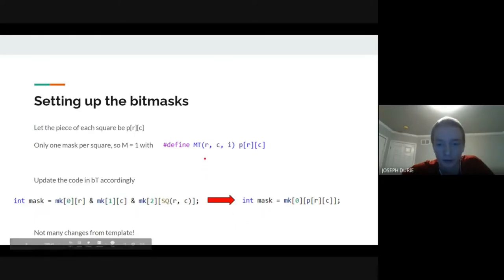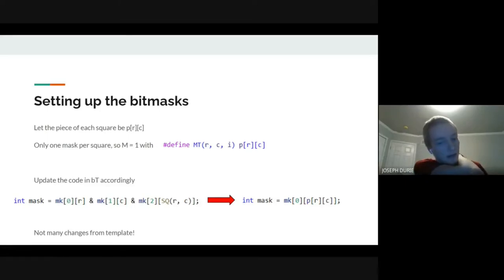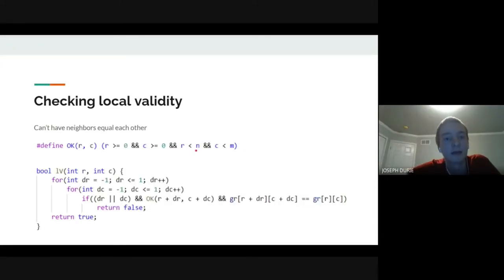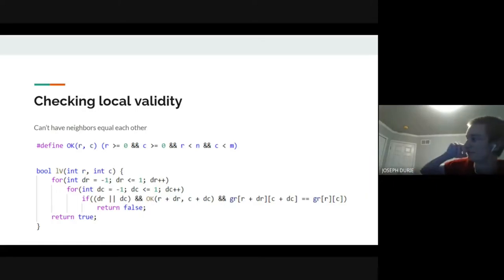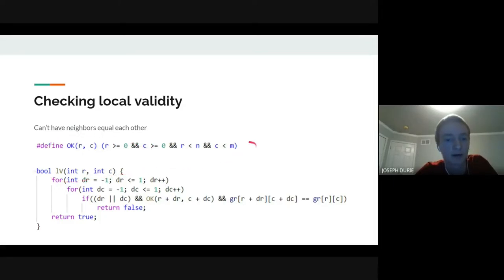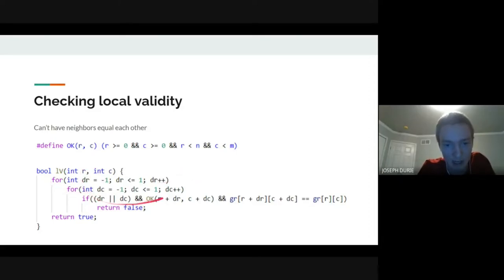For this problem, bitmasks are simpler: M=1, with one mask per piece. Define mt(r,c,i) = p[r][c] (the piece index), so mask[0][p[r][c]] is the only mask per square. The locally_valid check loops over all eight neighbors. Using the macro ins(r,c) to check if a square is inside the grid, we iterate dr and dc from −1 to 1, skip (dr,dc)=(0,0), and if any neighbor has the same grid value, return false; otherwise return true.